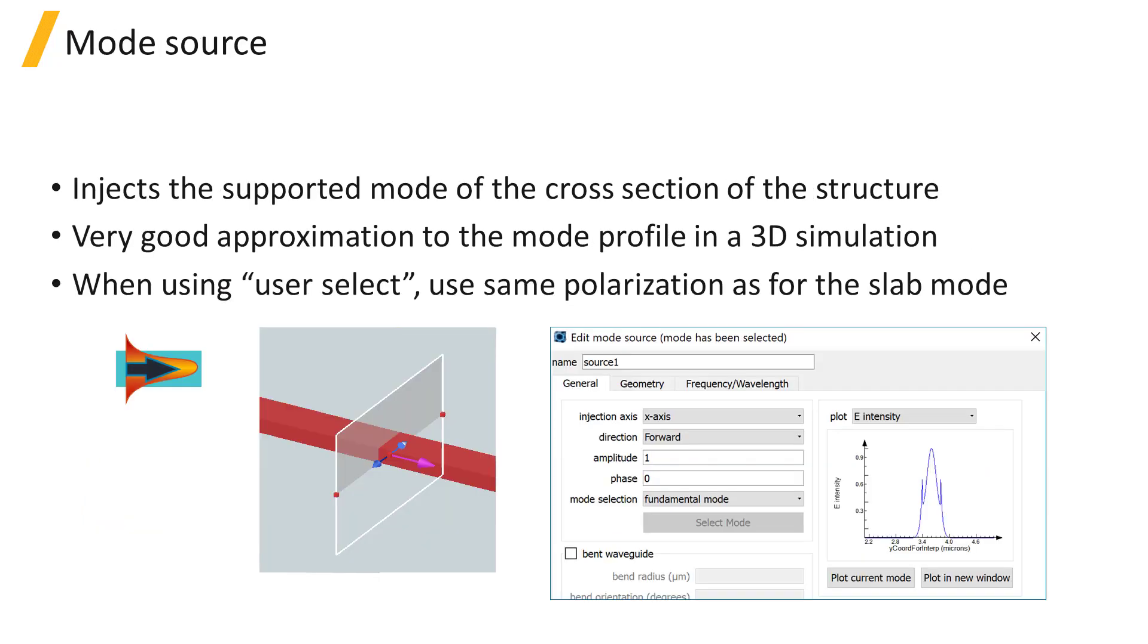The most commonly used type of source is the mode source, which is used to inject a supported mode across section of the structure. For the mode source, the field profile expanded along Z using the slab mode is a very good approximation to the mode profile in a 3D simulation.